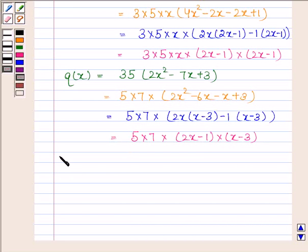The GCD of both the polynomials will be 5 into 2x minus 1.